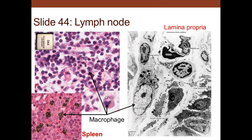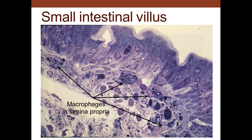In the lymph node and spleen, we can see macrophages that have phagocytized carbon. In the lamina propria of the gut, among intestinal absorptive cells, there are additional macrophages. A characteristic of macrophages is the presence of granules in various states of digestion, with varying sizes of phagocytized structures—reflecting the different stages of degradation of ingested material.